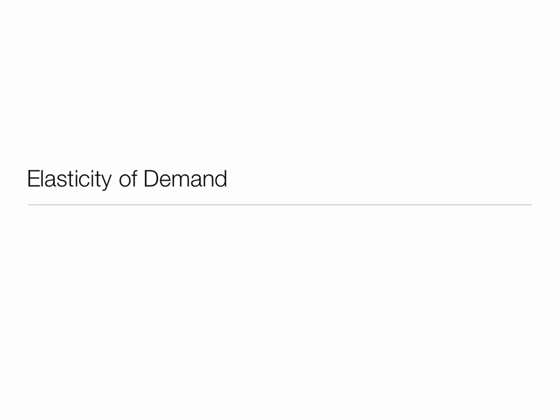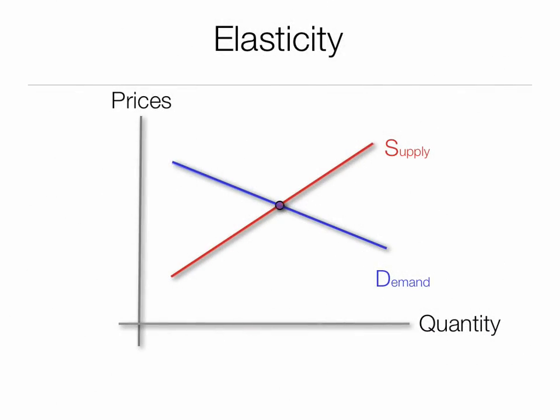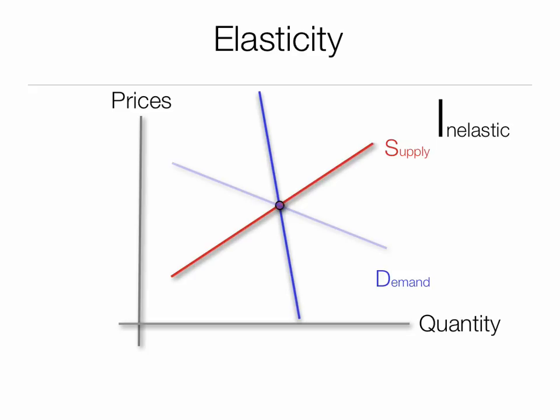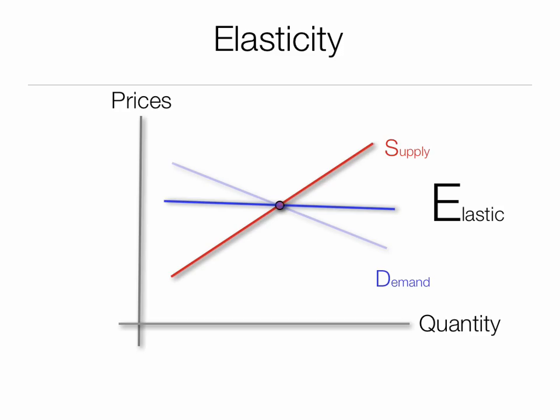In this presentation, I'm going to talk about the elasticity of demand. Elasticity of demand means when something's inelastic, the demand curve is more up and down, like the 'I' of inelastic — something to remember. When it's more elastic, the demand curve is kind of flat. It looks like one of the branches of the 'E' for elastic.